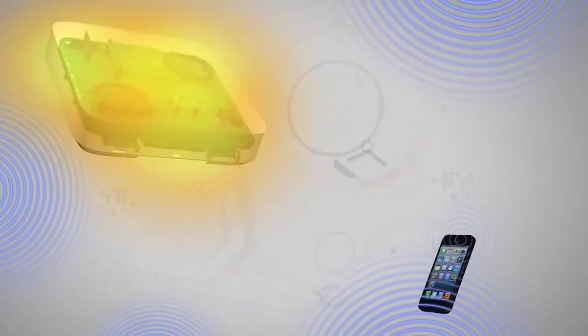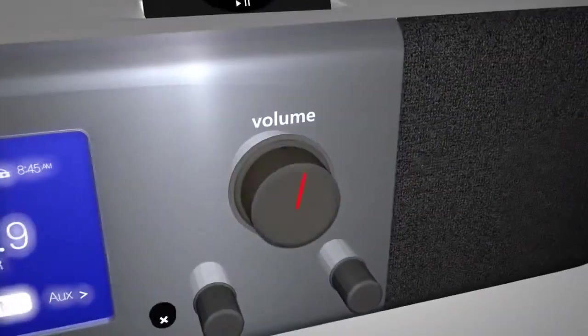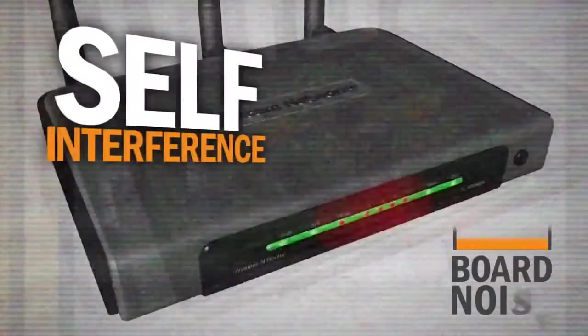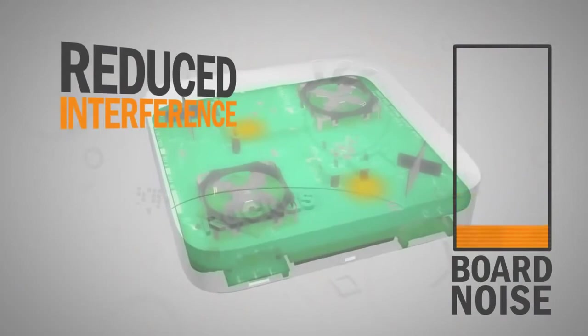To make an access point listen better, the internal noise from electronic components must be controlled and reduced. If you've ever turned up the volume on your stereo without playing music, that's static noise. In Wi-Fi, this system noise results in self-interference. Reducing this interference is essential.